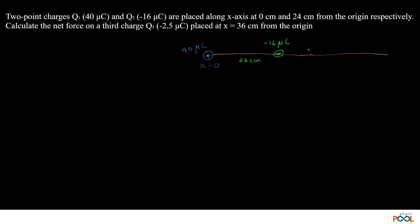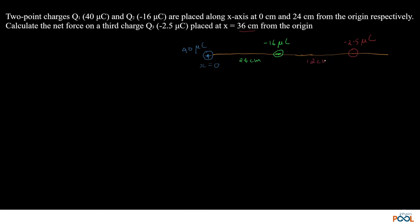The third charge q3 = minus 2.5 micro coulomb is kept at 36 cm from the origin. Distances are measured from the origin — 24 cm to reach minus 16 micro coulomb, so the remaining distance from minus 16 micro coulomb to q3 is only 12 cm. The total distance from the origin to q3 is 36 cm.